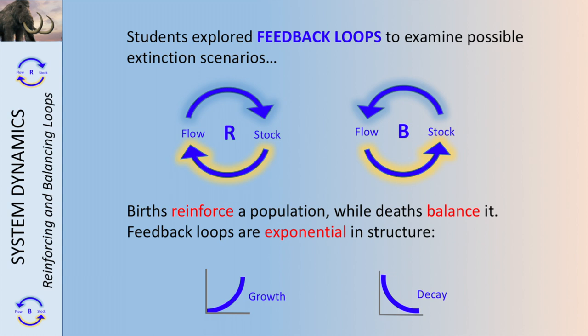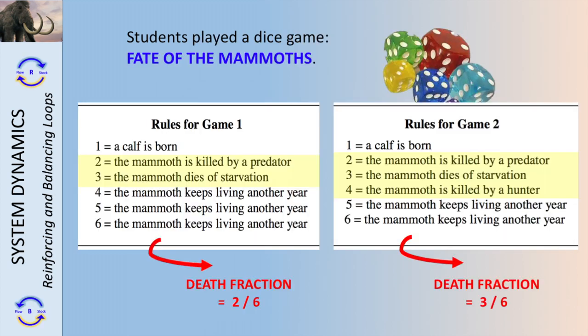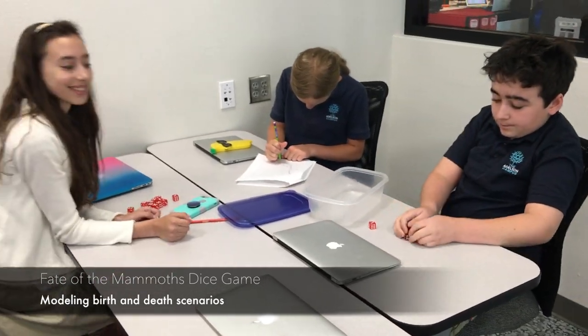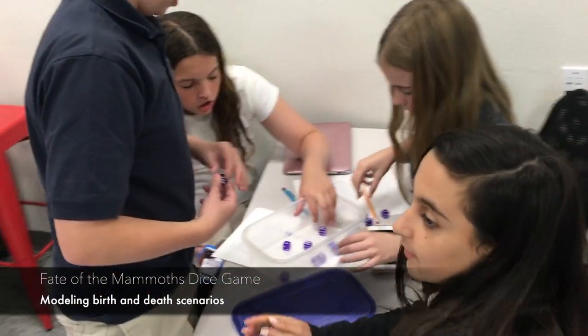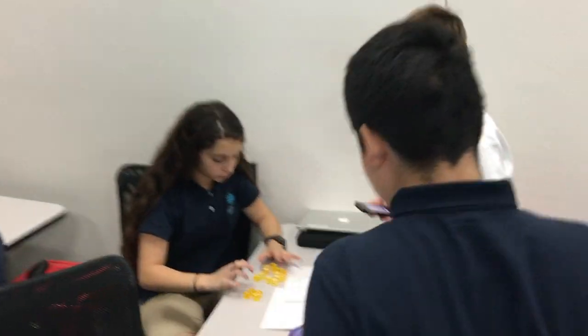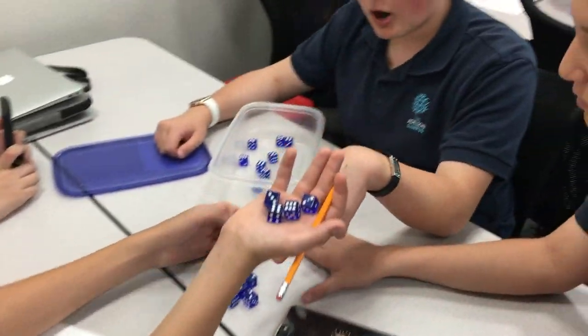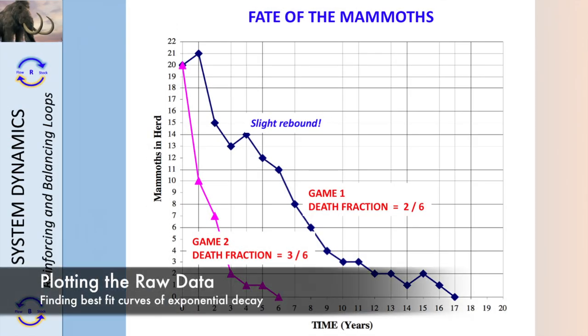students began to explore feedback loops — reinforcing and balancing growth and decay — using a dice game with different rules in each game. Students then took the data they obtained from their dice games and plotted their results on a graph.